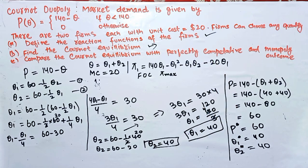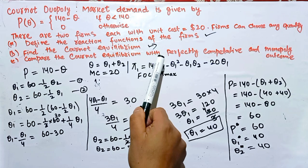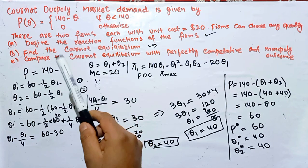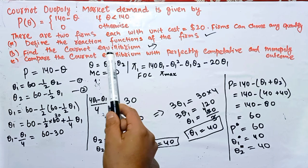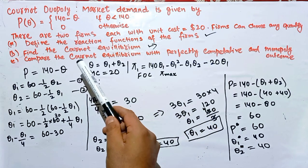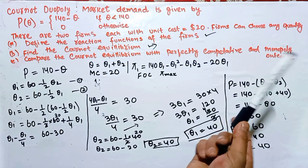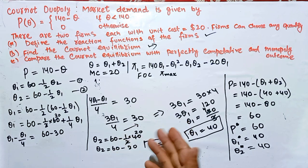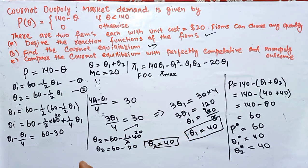This completes the first two parts. For the third part, we need to compare the Cournot equilibrium with the perfectly competitive and monopoly outcomes — mathematically showing what happens when the number of firms approaches infinity and when there is only one firm. This will be covered in the next video. Thanks for your cooperation and support; please share and subscribe to this channel.